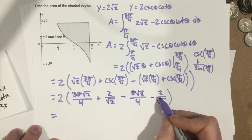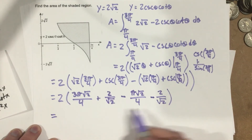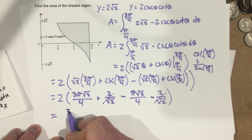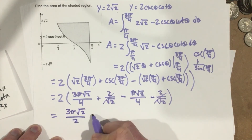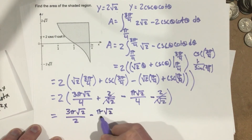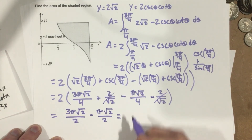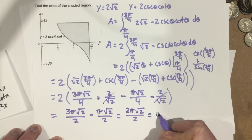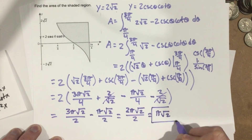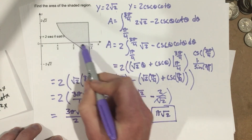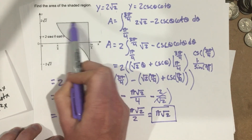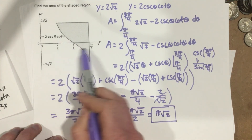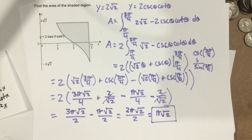We can see that the 2 over root 2 terms cancel. We multiply the 2 throughout, and it cancels with the denominator, leaving us with 3 pi root 2 over 2 minus pi root 2 over 2, which is 2 pi root 2 over 2, which leaves us with pi root 2. So pi root 2 is our area for the region between y equals 2 root 2 and y equals 2 cosecant theta cotangent theta, from pi over 4 to 3 pi over 4.